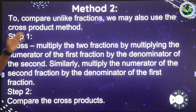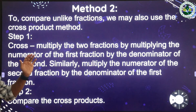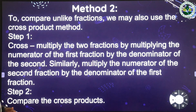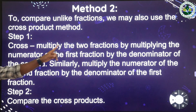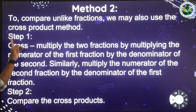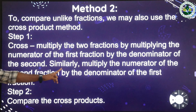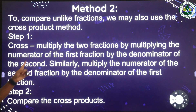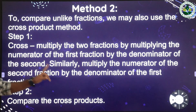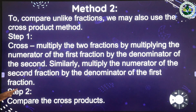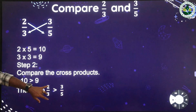The second method is the cross product method. To compare unlike fractions, we cross multiply the numbers. Step one: cross multiply the two fractions by multiplying the numerator of the first fraction by the denominator of the second fraction. Similarly, multiply the numerator of the second fraction by the denominator of the first fraction. Step two: compare the cross products.